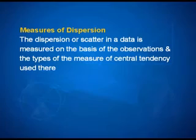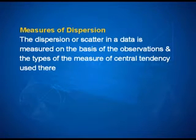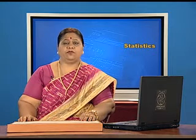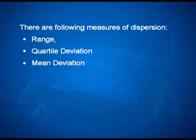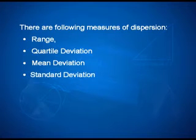Let us discuss the measures of dispersion. The dispersion or scatter in a data is measured on the basis of the observations and the types of measures of central tendency used. There are the following measures of dispersion: first, range; second, quartile deviation; third, mean deviation; fourth, standard deviation. In this episode, we shall study all of these measures of dispersion except the quartile deviation.